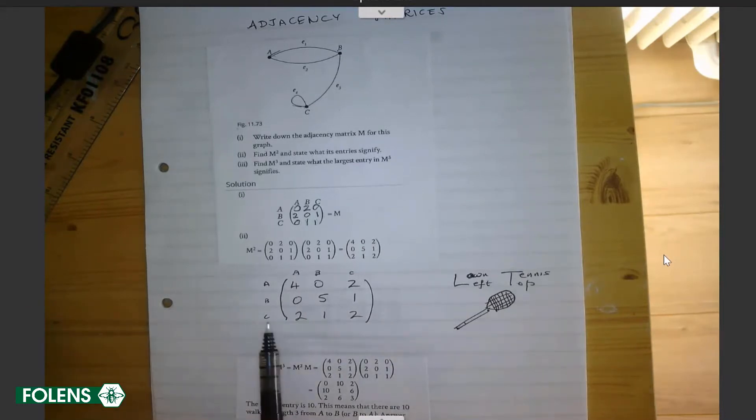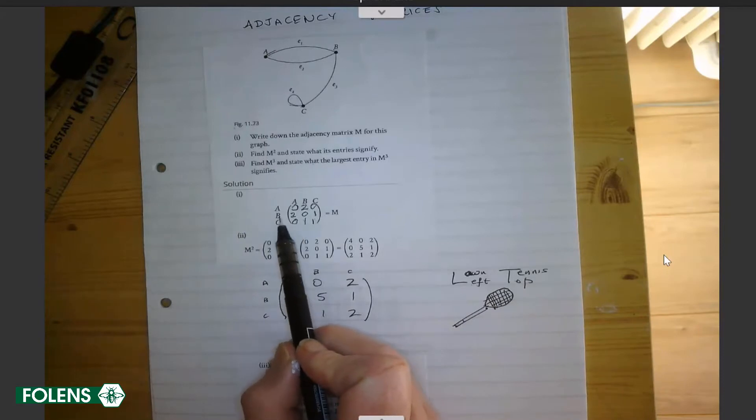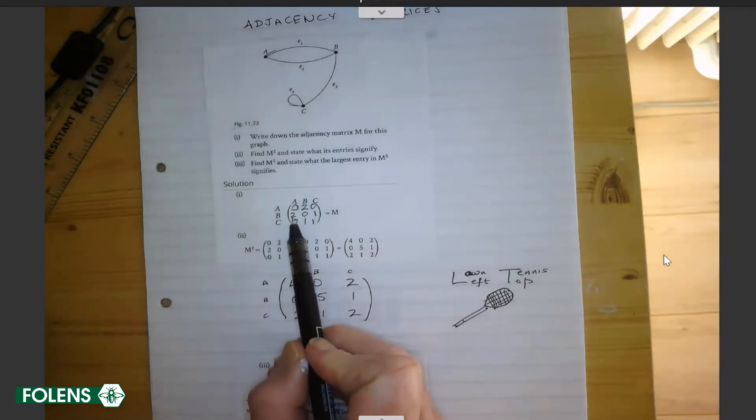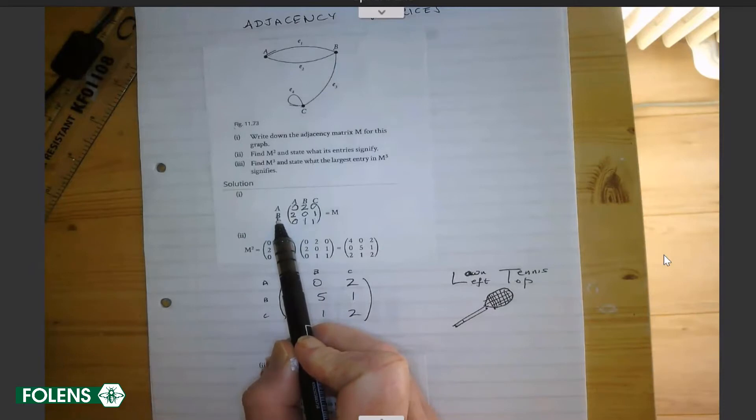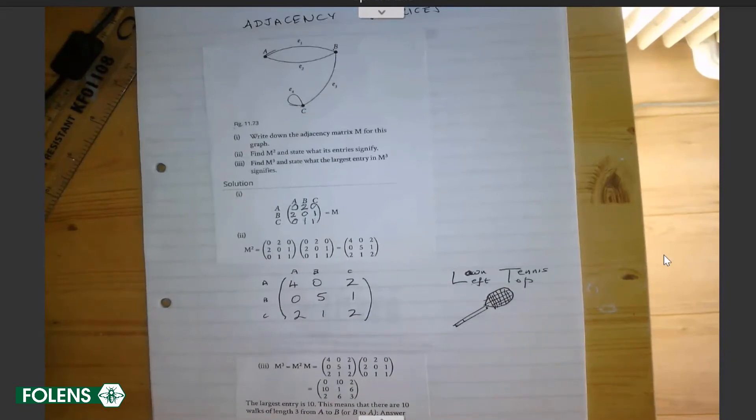It is very important that when you read the matrix, it reads from left to top. For example, from B to A is 2. That is represented there. You start on the left, B, from B to A is 2. It goes from left to top. I always remember lawn tennis, LT, and if you remember lawn tennis, it starts on the left and goes to the top. That becomes particularly important when there are directed graphs where they aren't two-way streets.